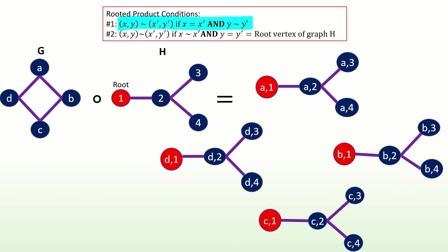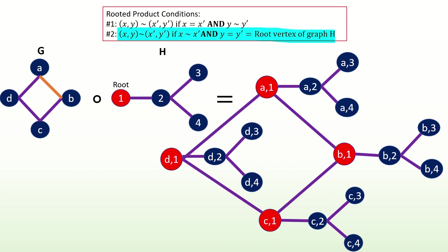Here are the rest of the adjacencies that follow from the first adjacency condition. Note how this adjacency condition has essentially copied the second input graph once for each vertex in the first input graph. Next, let's find all the adjacencies that derive from the second adjacency condition. We need to find all pairs of vertices whose right entry is the root vertex 1 in h and whose left entries are adjacent. For example, vertices a1 and b1 have right entries that are the same and equal to root vertex 1 in graph h, and their left entries a and b are adjacent in graph g. Therefore, a1 and b1 are adjacent in the product graph. Note how we have copied the first input graph exactly once, using the vertices whose right entry equals the root vertex in the second input graph.